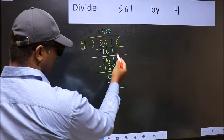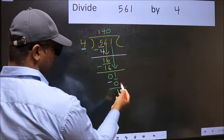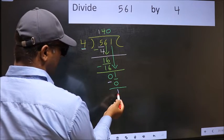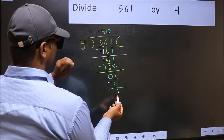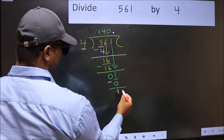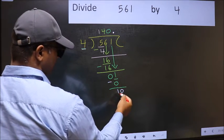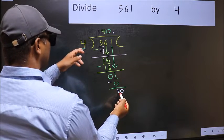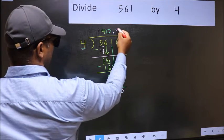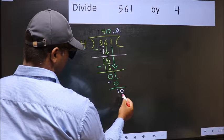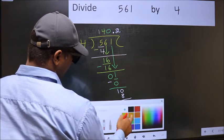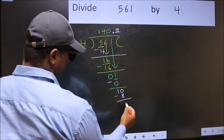Over here, we did not bring any number down. And 1 is smaller than 4. So now you can put a dot and take 0. So 10. A number close to 10 in 4 table is 4 twos, 8. Now you should subtract. 10 minus 8, 2.